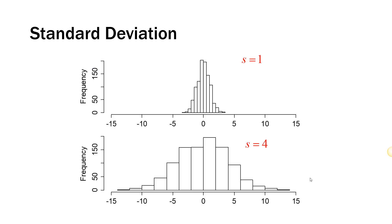Standard deviation is a measure of how spread out the data is, so a bigger number means the data is more spread out. Here you have two different distributions — one has a standard deviation of one and the other has a standard deviation of four. As you can see, the bottom distribution in that histogram has data points that are a lot more spread out than in the top histogram.